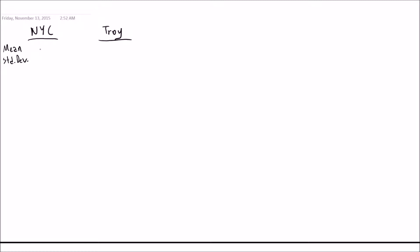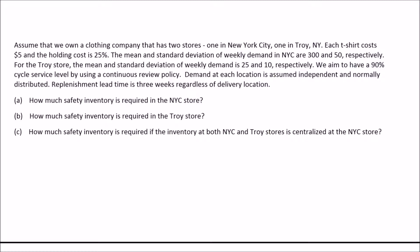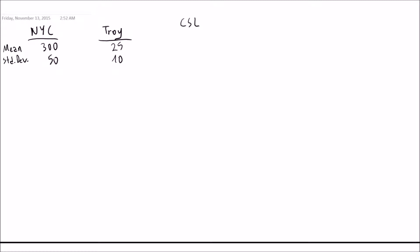Summarizing our data: for New York City, mean is 300 and standard deviation is 50. For Troy, mean is 25 and standard deviation is 10. The desired cycle service level is 90%, the cost of one t-shirt is $5, and the holding cost H is 25%. In Part A we want to find the safety inventory for the New York City store.